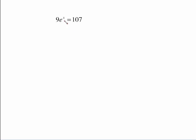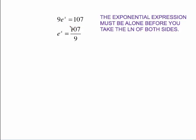Now, a base of e. Same process, which is one other thing to talk about here. This is 9 times e to the x. This process of taking the ln of both sides is only worthwhile if this exponential thing stands alone. So the first thing we want to do is divide both sides by 9, which gives us this. This is crucial. The exponential expression must be alone before you take the ln of both sides.